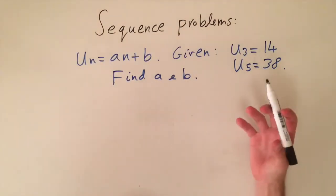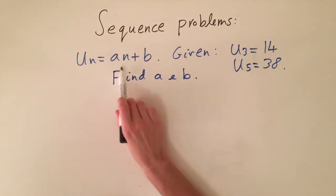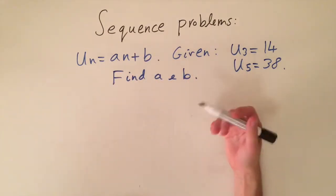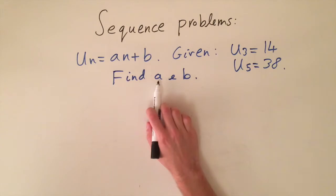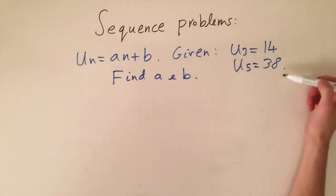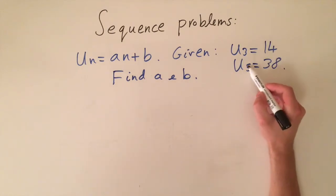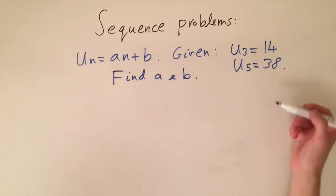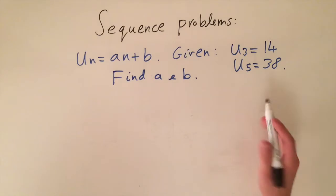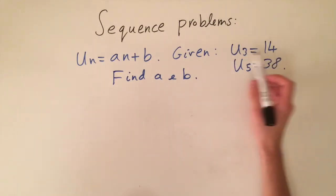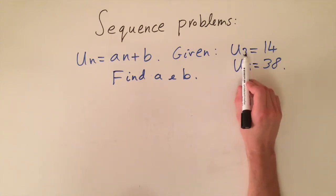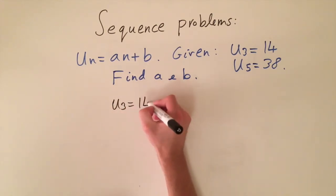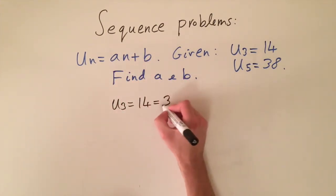For the final problem, we are given a linear sequence u(n) = an + b, where constants a and b are unknown. We're told that the third term equals 14 and the fifth term equals 38. Substituting into the formula: u(3) = 14 gives 3a + b = 14, and u(5) = 38 gives 5a + b = 38.